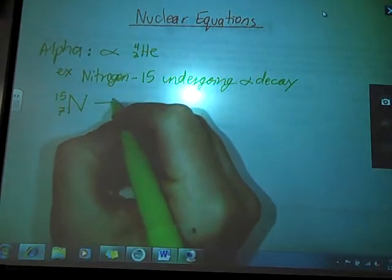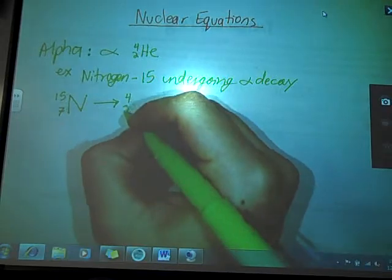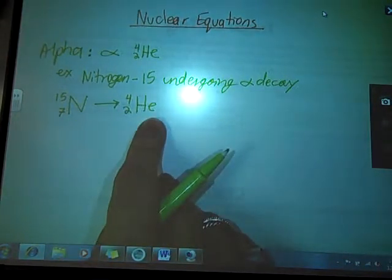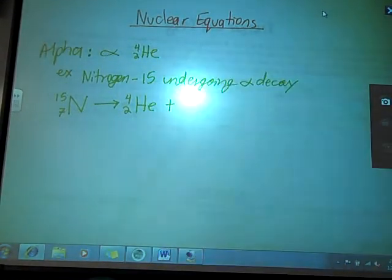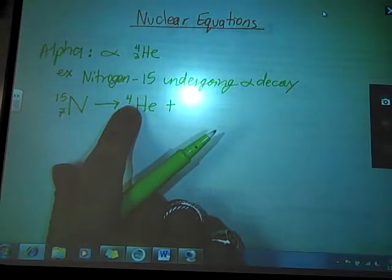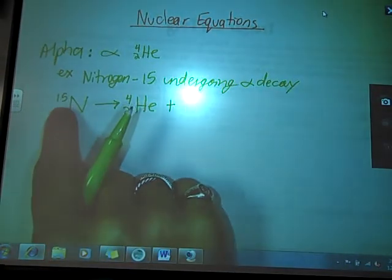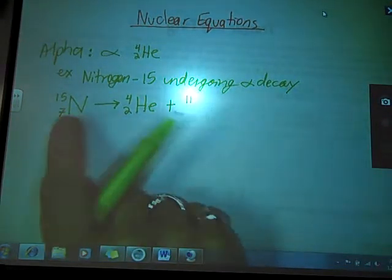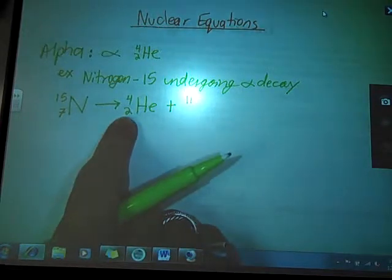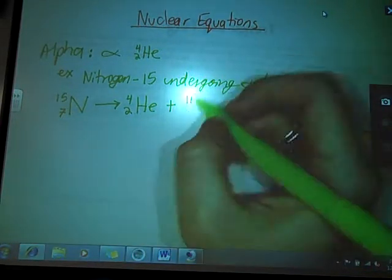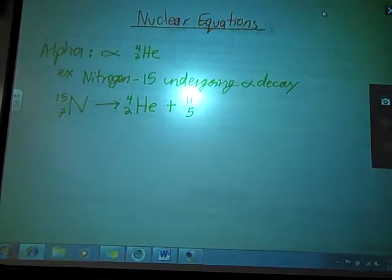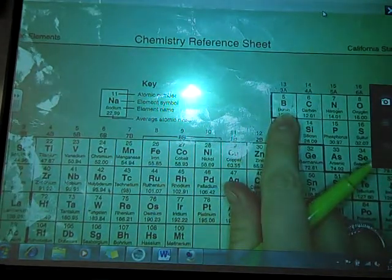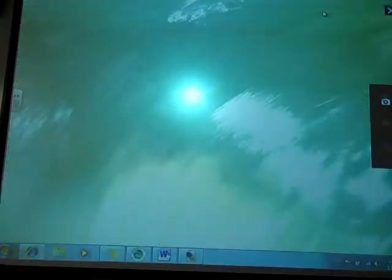Since it's undergoing alpha decay, it is going to emit an alpha particle. So my larger nucleus is going to break into two smaller pieces, a helium nucleus and something else. So my mass number is going to go down by 4. So 15 minus 4 is 11. My atomic number is going to go down by 2. 7 minus 2 is 5. So I have effectively created a second nucleus. I have to go to my periodic table and find atomic number 5. It is in fact boron.